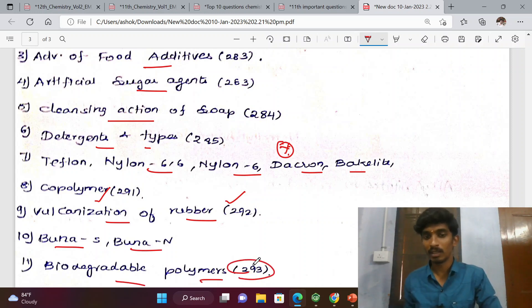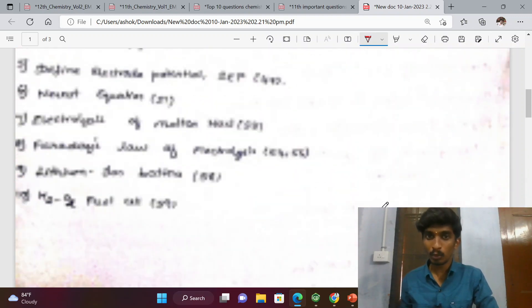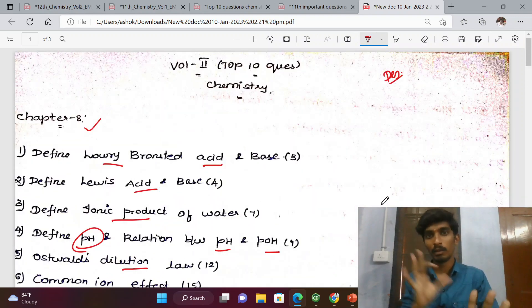So these are the important questions from volume 2. For organic, I have a plan that I will control. These are all the important questions. I hope this will be useful. Thank you.